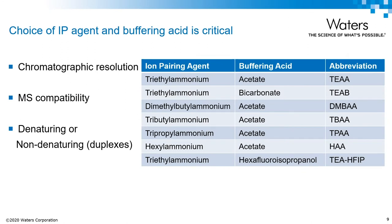Now that we've covered some column chemistry and mobile phase basics, let's start to go through some considerations that should be made when selecting an ion pairing agent. Ultimately, selectivity and resolution are going to be impacted by your choice. TEAA is the most traditional ion pairing agent used, especially for optical-based assays. Since the introduction of HFIP as a counter-ion, TEA-HFIP is regarded as the most effective ion pairing agent for single-stranded oligo analysis in terms of achieving optimal LC-MS sensitivity and resolution.